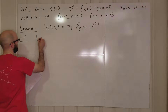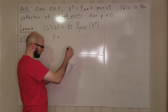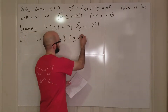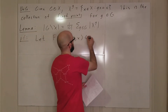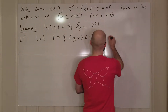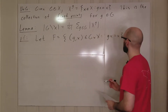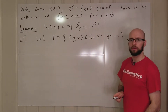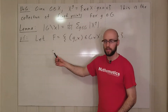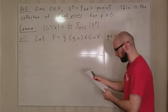We let F be the collection of pairs (g, x) in G × X such that gx = x. We're going to compute the size of F in two ways, and that will give us what we're looking for.